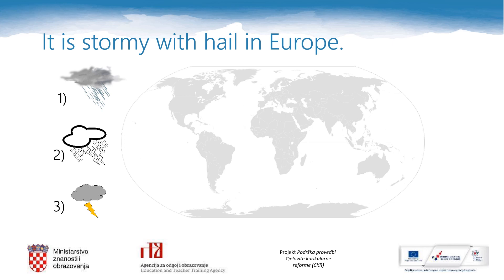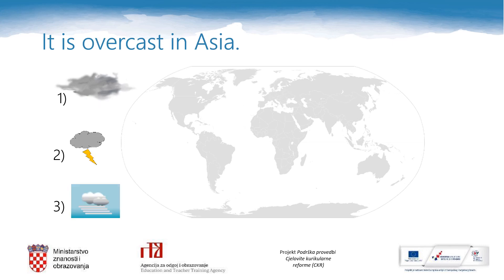It is stormy with hail in Europe. Number one means rain showers, number two means stormy with hail — this is what we need — and number three means thunder. So we need number two, and the continent is Europe. It is overcast in Asia. Number one is overcast — this is what we need. Number two is thunder, number three is foggy. The continent is Asia.